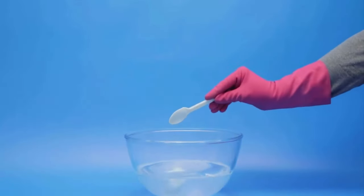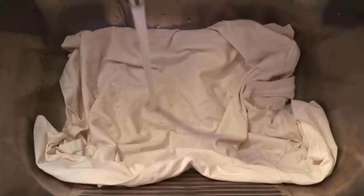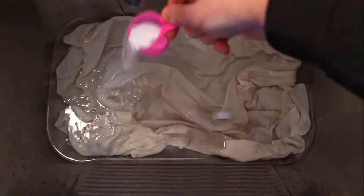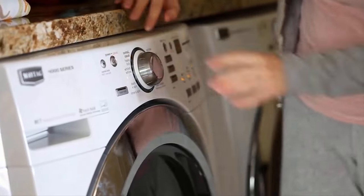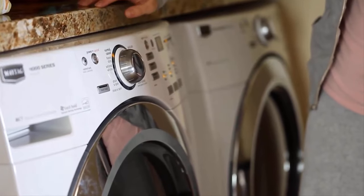Oxygen bleach is a gentle bleaching agent that removes stains and brightens laundry. Fill a basin with warm water and add one tablespoon of bleach. Then soak your white cloth in the water for one hour. Wash it in the washing machine, and you will get stain-free clothes easily.